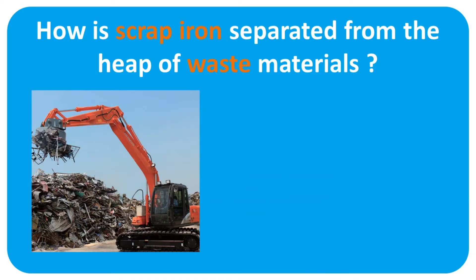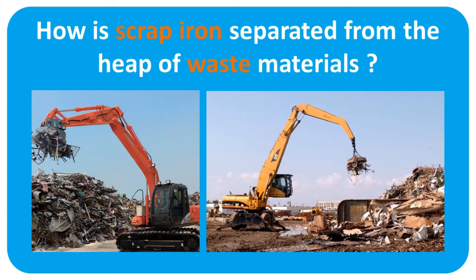In these pictures, you are seeing a machine known as a crane. Scrap iron is separated from the heap of waste material by using these machines. There is a big magnet fitted to one end of a crane. When such a crane is lowered onto the heap of waste material, the scrap iron objects present in the heap stick to the magnet.